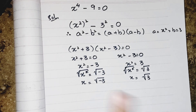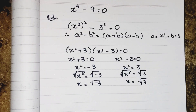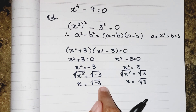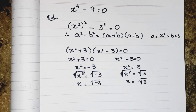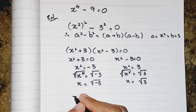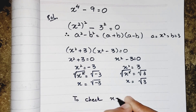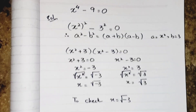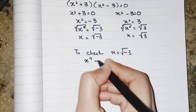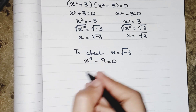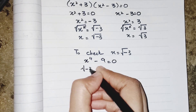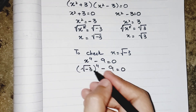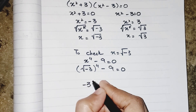We will already get the answer. So I have to put it into the given question to check whether my answers satisfy the equation or not. To check: x equals minus √3. I have to put it into x⁴ minus 9 equals 0. In place of x I write (√3)⁴ minus 9 equals 0.